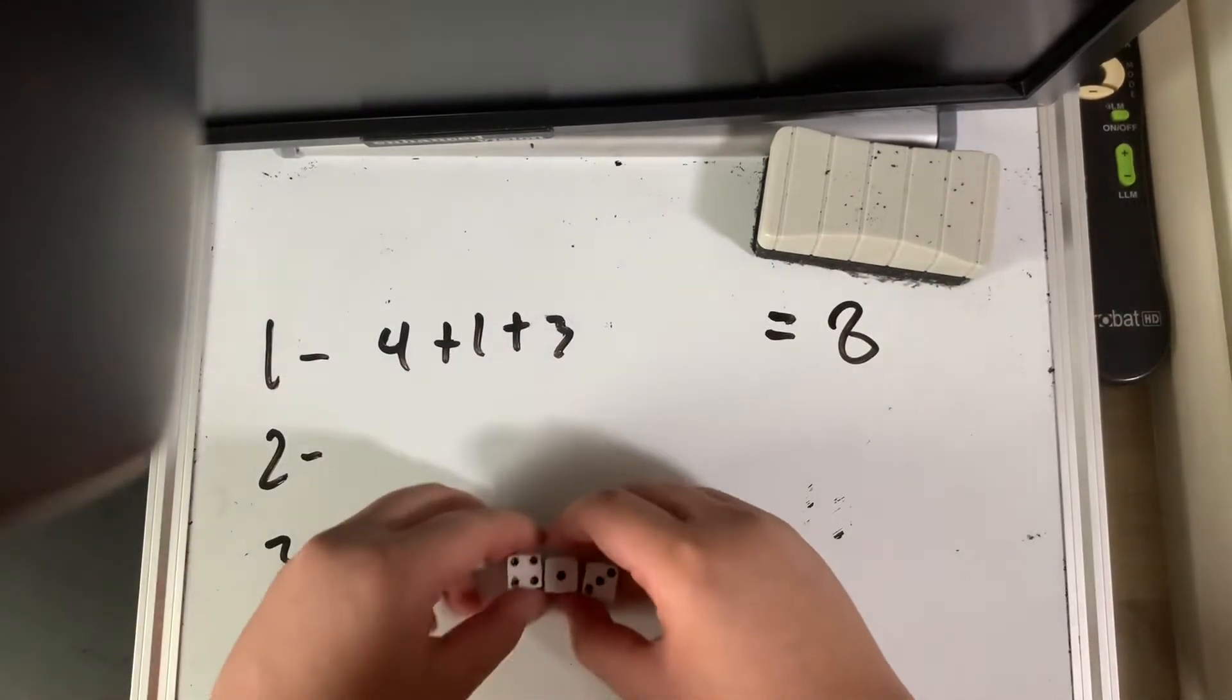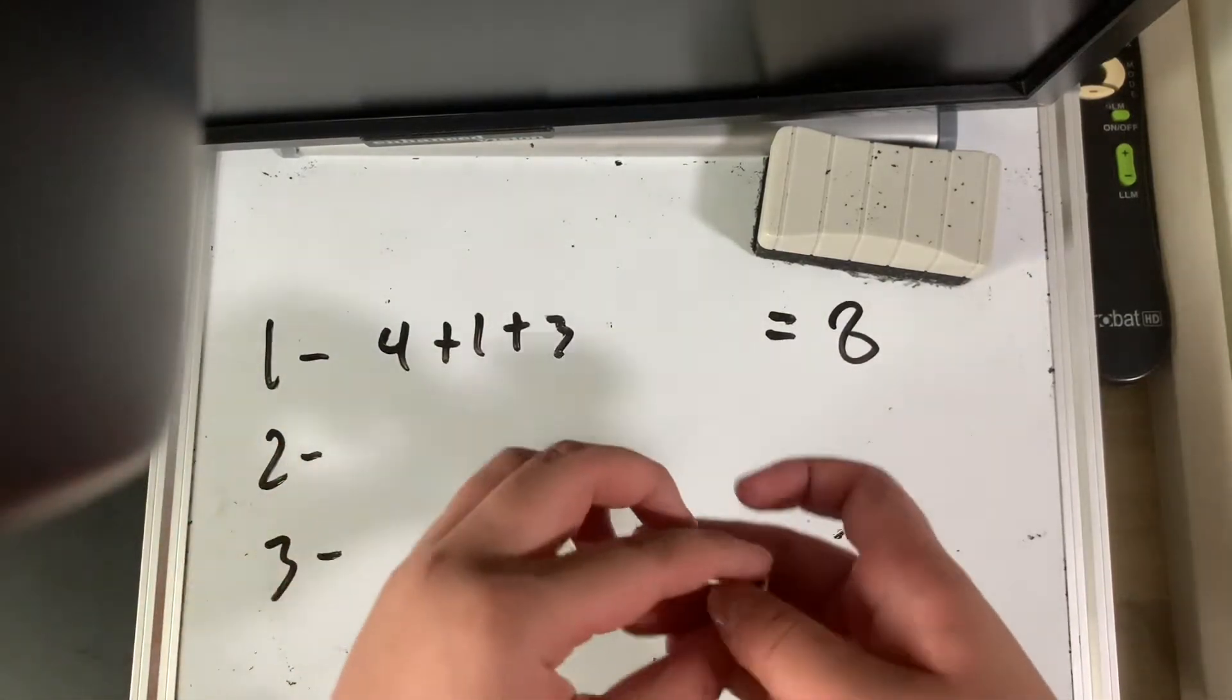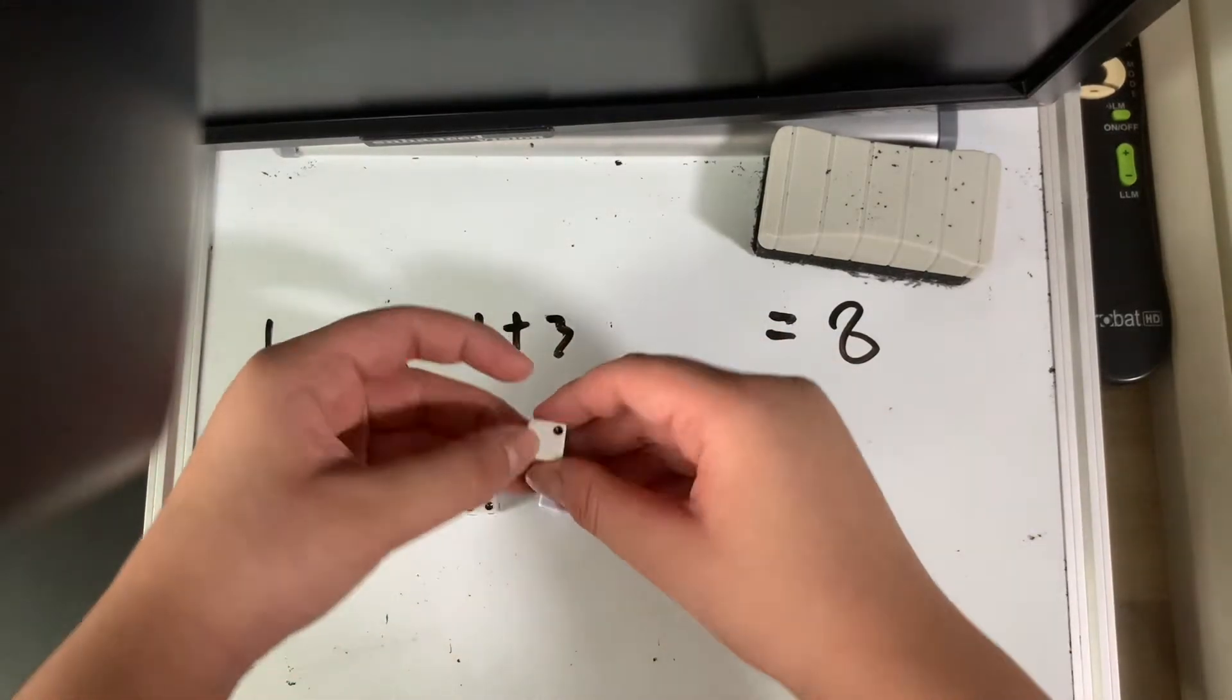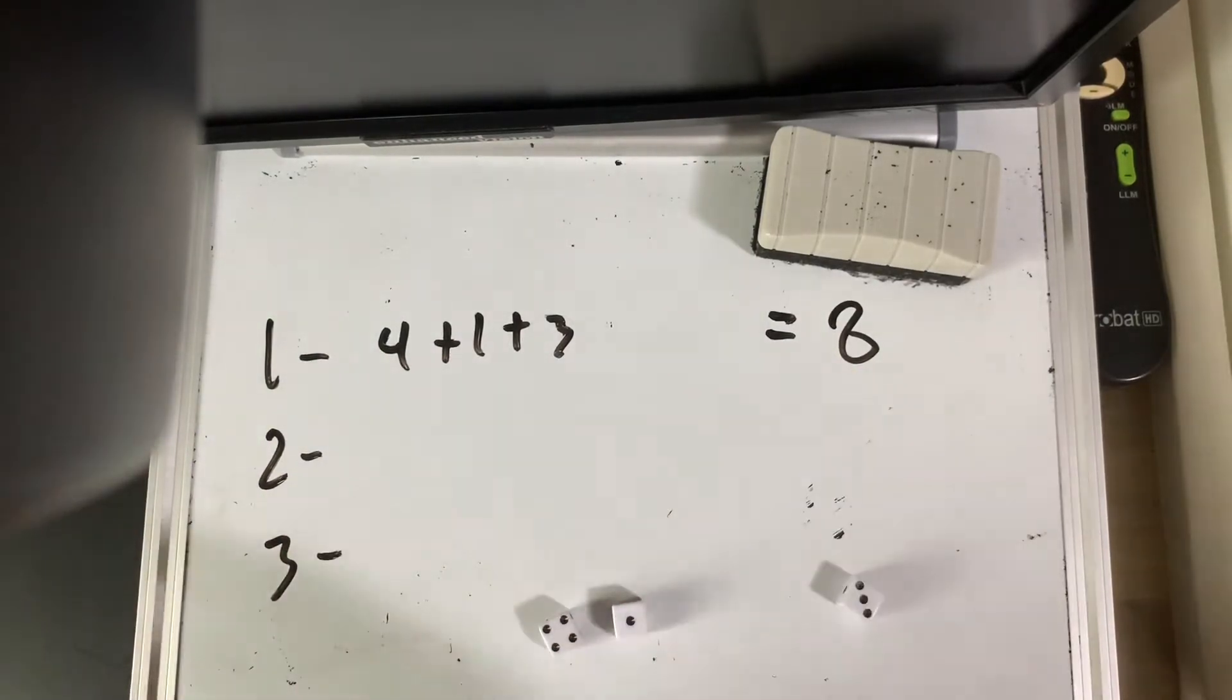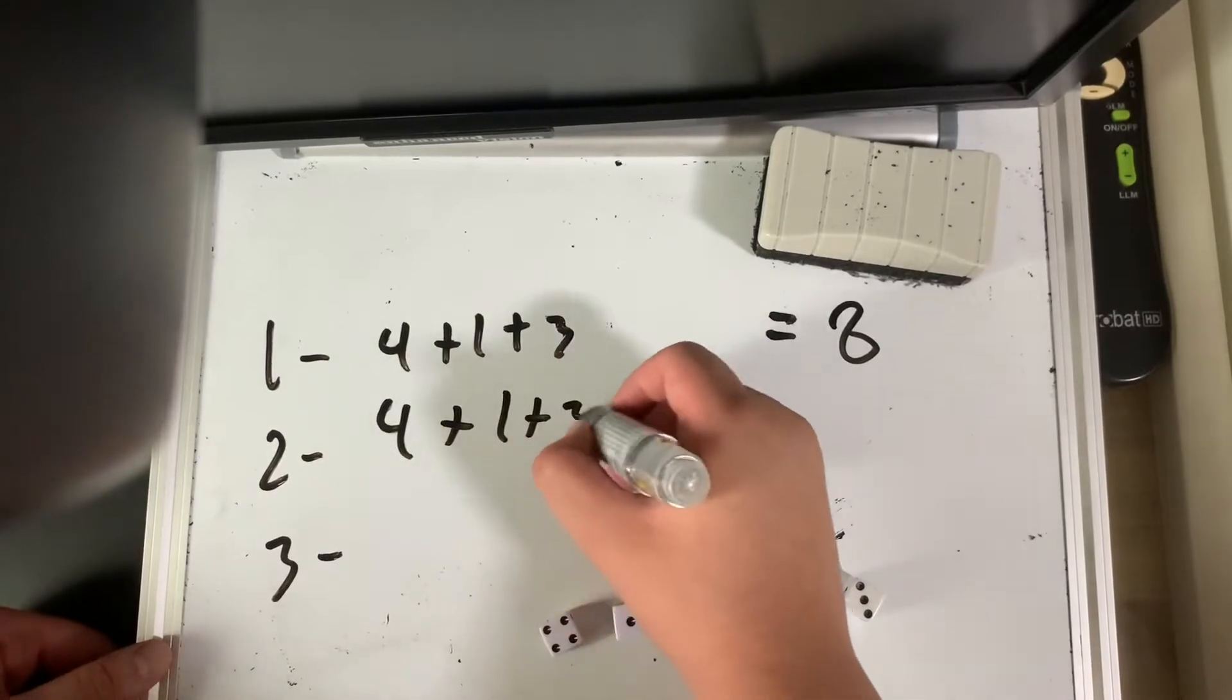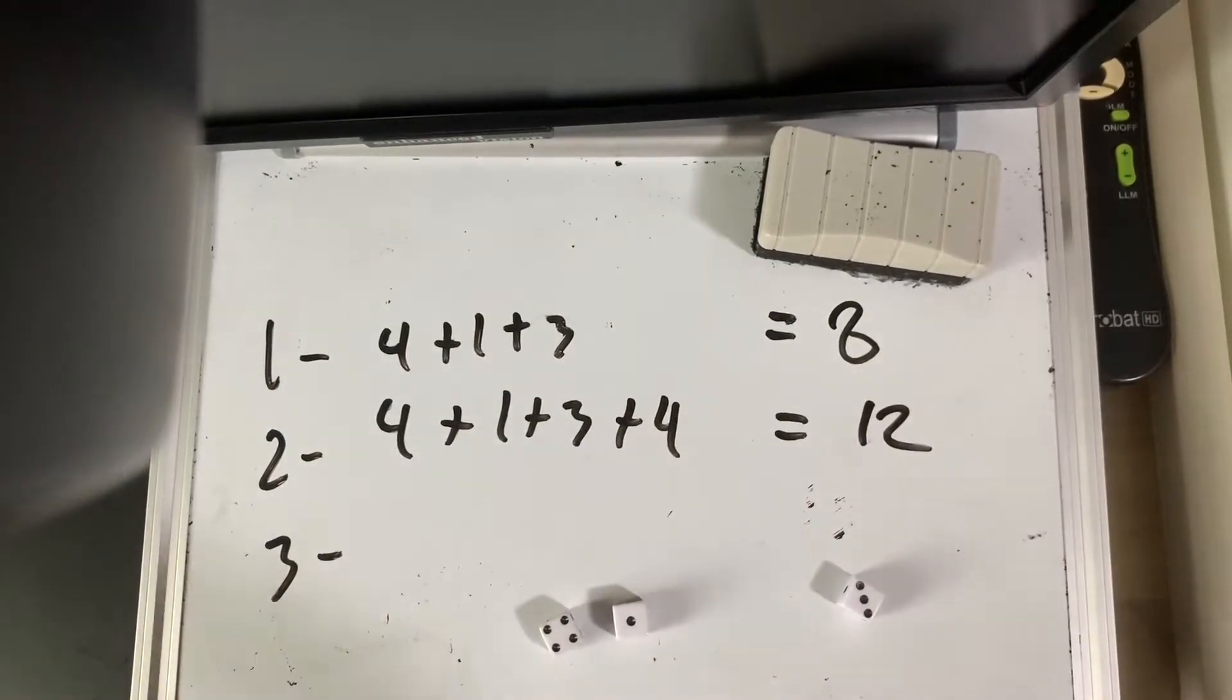Next step, pick any random die. I'm going to pick the 3, and I'm going to look at the bottom of the 3. The original one was 3, look at the bottom, the bottom one is 4. So what do you do? You take that bottom number and add it to this sum. 4 plus 1 plus 3 plus 4, so that's going to be 8 plus 4, which is 12.